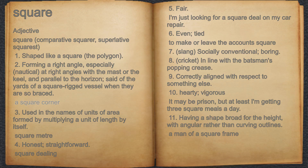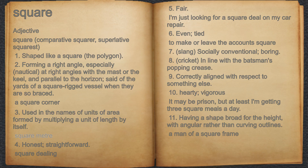For example, a square corner. 23. Used in the names of units of area formed by multiplying a unit of length by itself. 24. Square meter. 24. Honest, straightforward. 25. Square dealing.